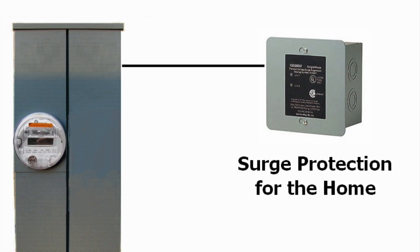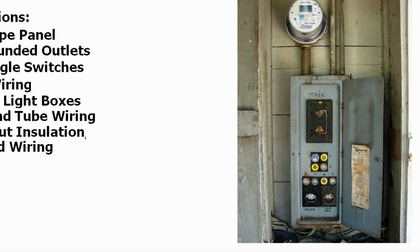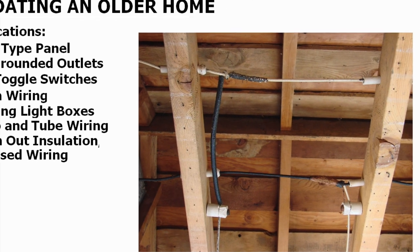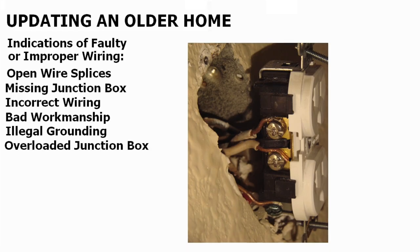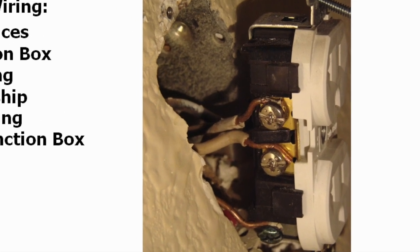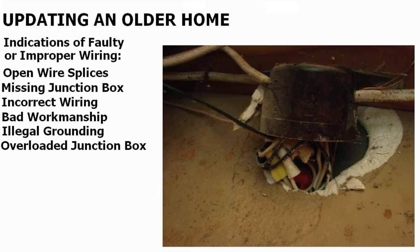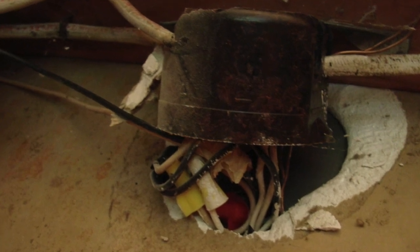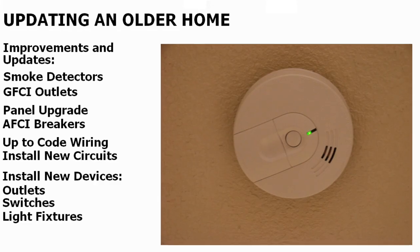Then we get into updating an older home — really important because there's still a lot of old wiring out there. We show how to identify old fuse-type panels, outdated outlets, two-wire outlets, old toggle switches, and cloth wiring. We also cover common wiring problems caused by improper installations: devices installed without light boxes, junction boxes, or outlet boxes; knob and tube wiring not properly converted; exposed wiring problems; and open splices.